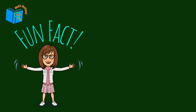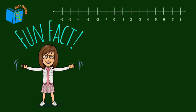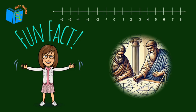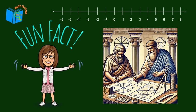Here's a fun fact: the concept of a number line dates back to ancient Greek mathematicians like Euclid and Archimedes, who used geometric representations of numbers, which evolved over time into the number lines we use in modern mathematics today.